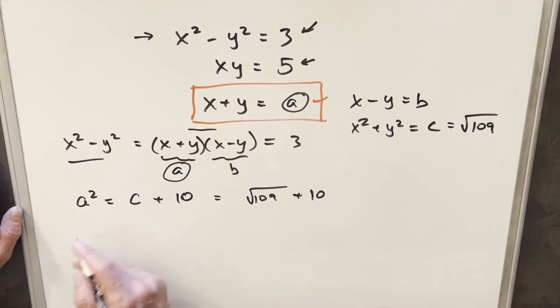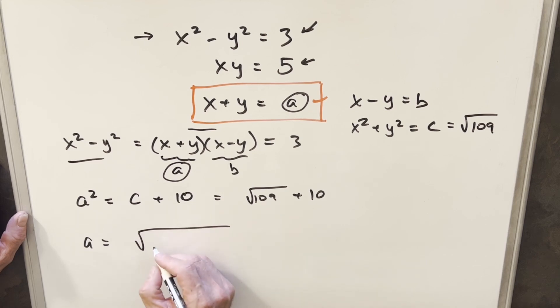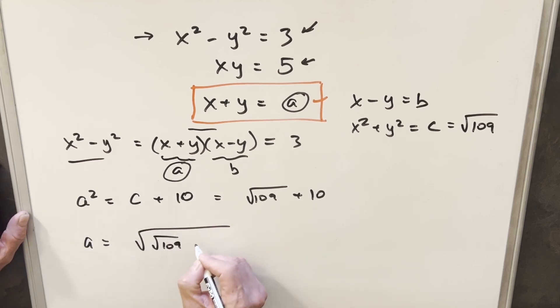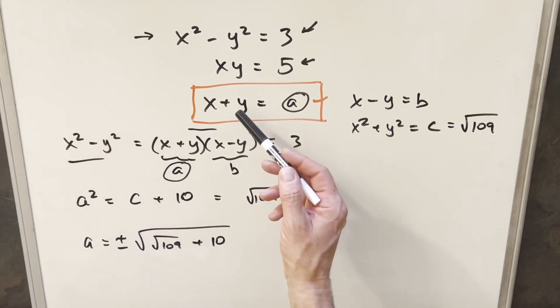But if I take a square root on both sides of this, I just get back to a. So I'll put a square root around this value over here. So we'll have the square root of the square root of 109 plus 10. But taking the square root here, we do need the plus or minus on this. And just notice it's basically the same thing. If they asked for x minus y, that's our b value.